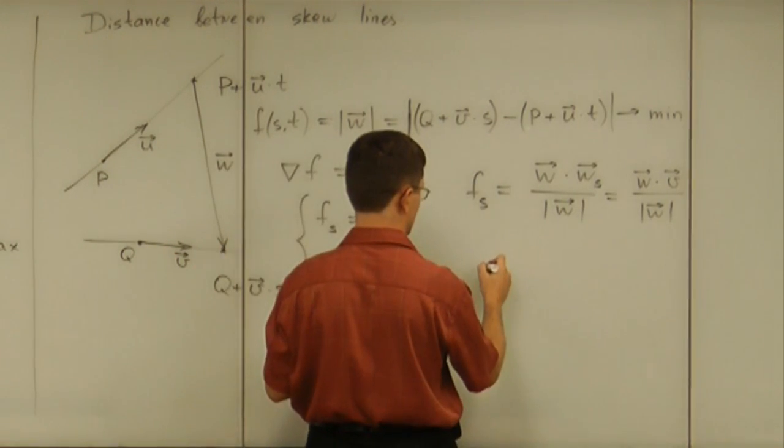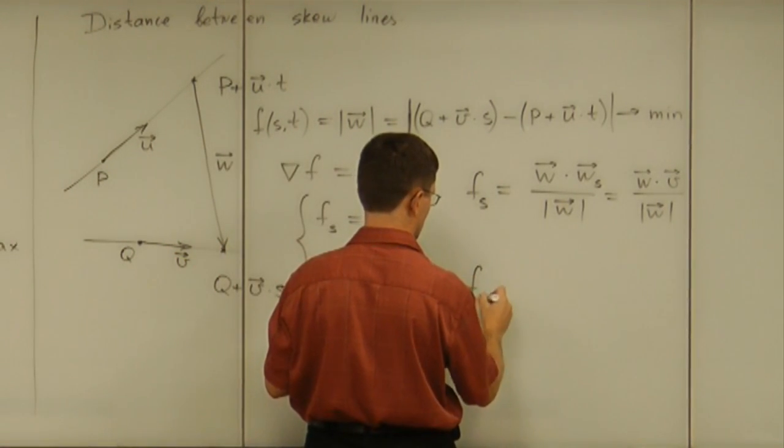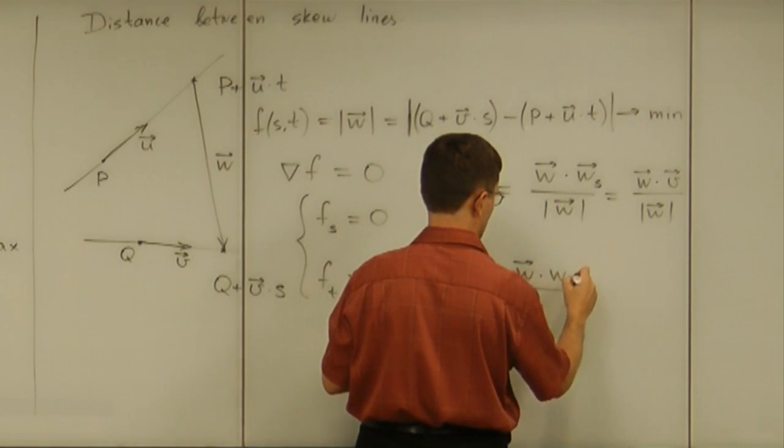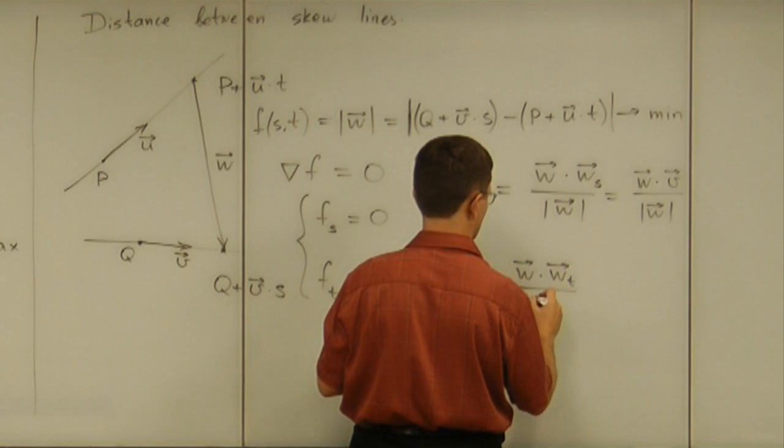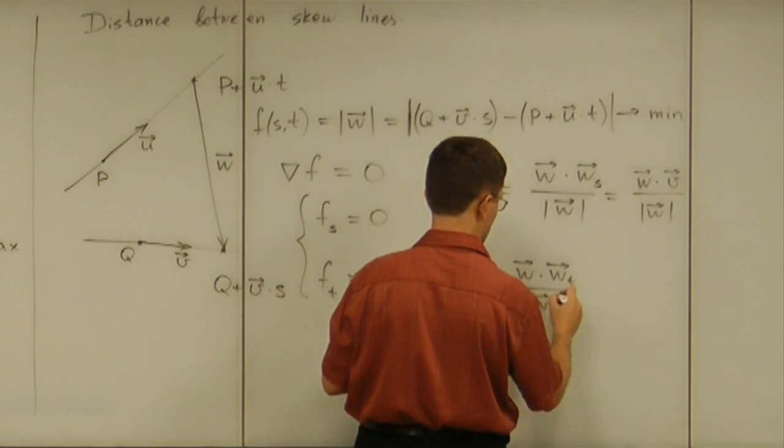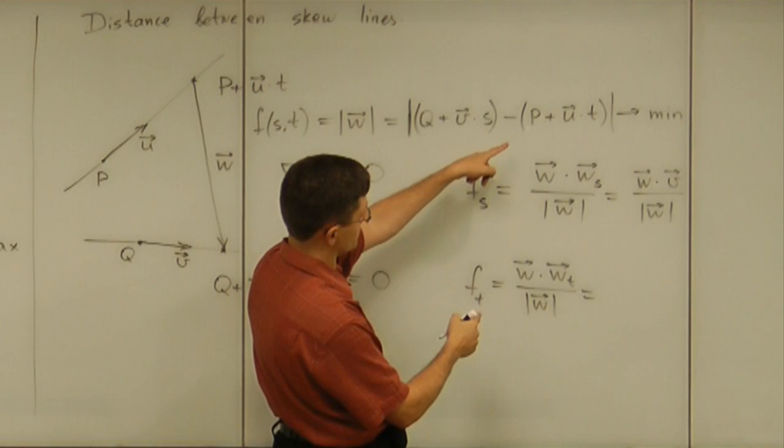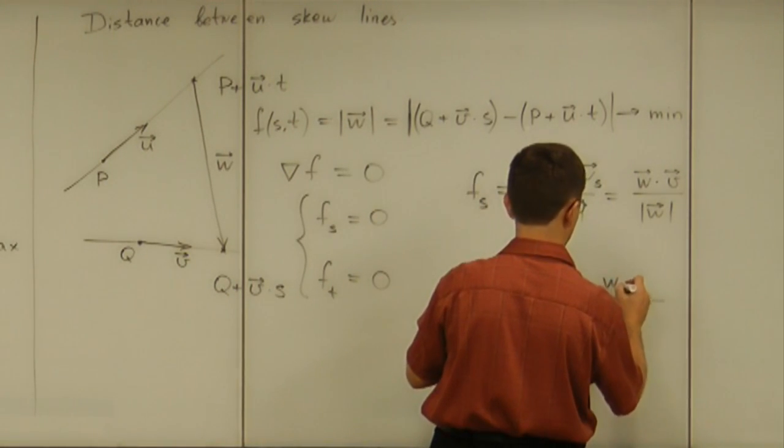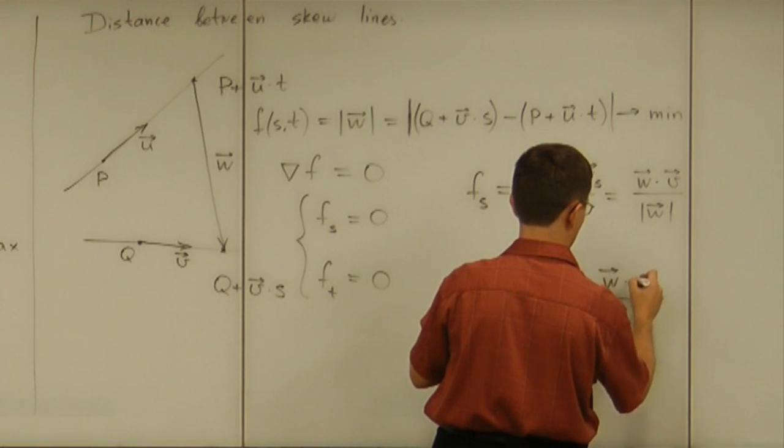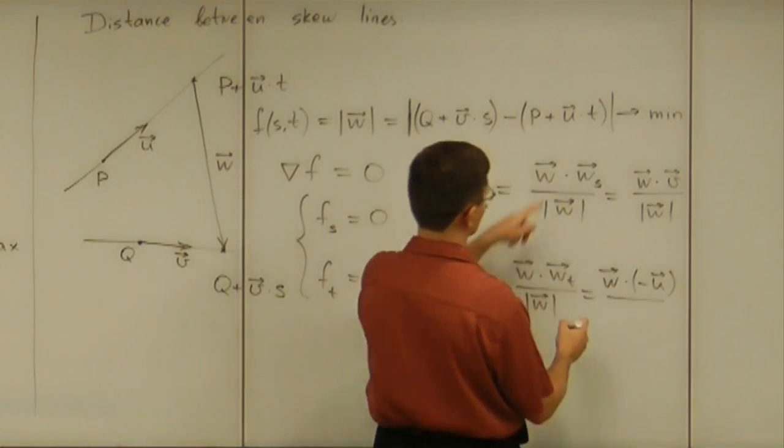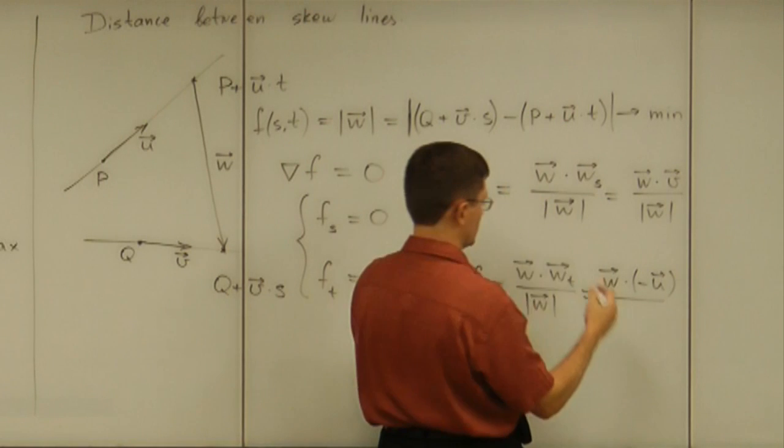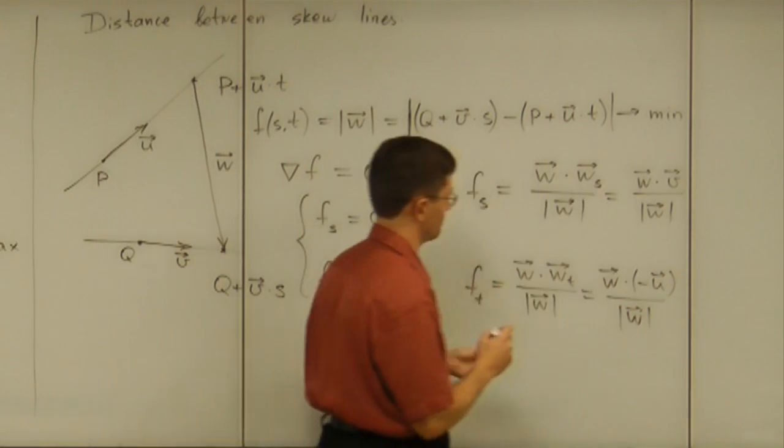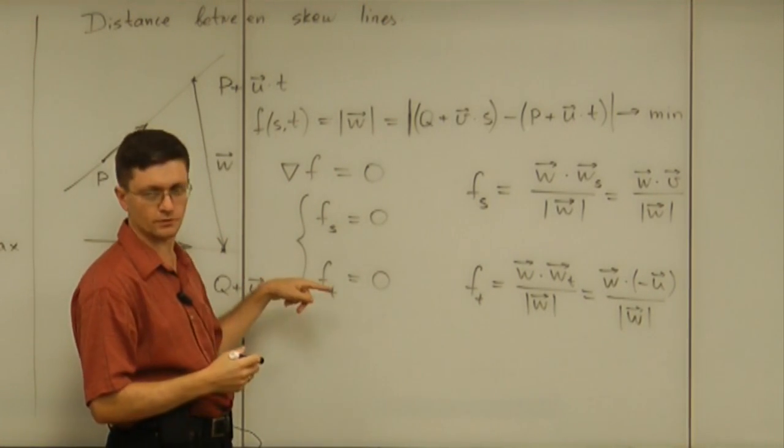And the same thing for f_t. Let's do it immediately. f_t is going to be w dot w_t divided by magnitude of w. And w_t is, you tell me, that will be negative u. Right? Because... Okay, so we found both partial derivatives.